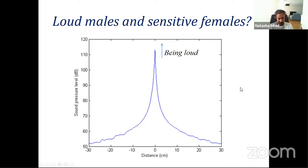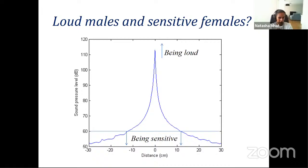The question I'm interested in is: what's going on in the tree cricket system? Is the male trying to make himself conspicuous, and is the female cooperating with him to make the signal more obvious to her in order to mate? Or is that signal a source of competition? So are the males making an effort to be loud, and are the females trying to make an effort to be sensitive?